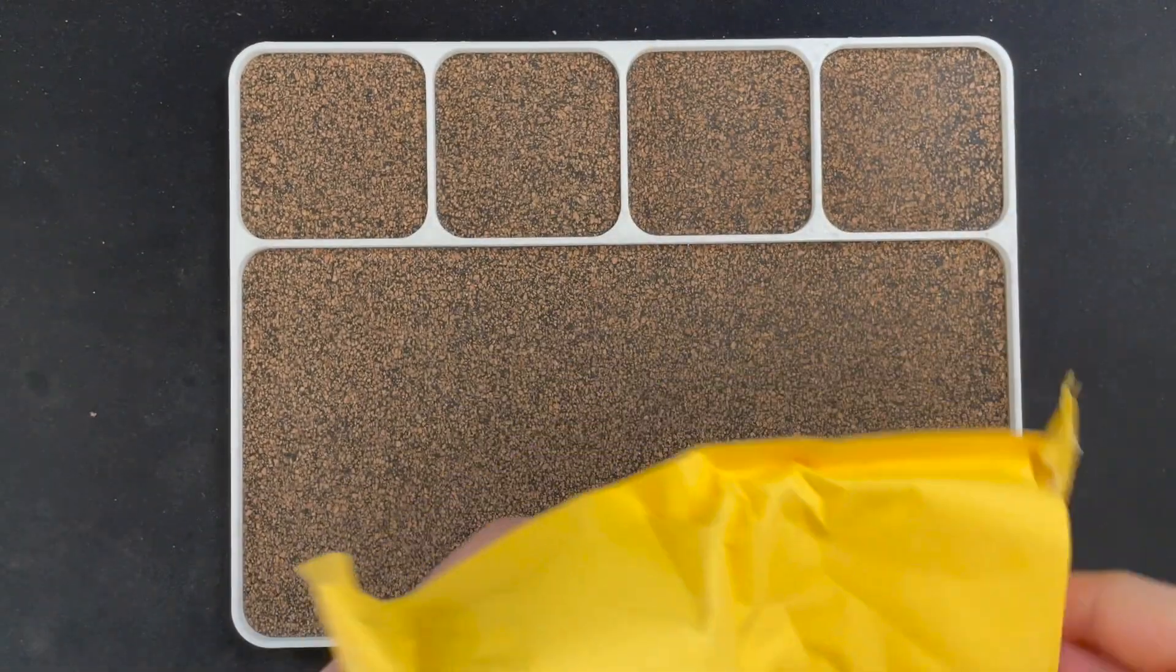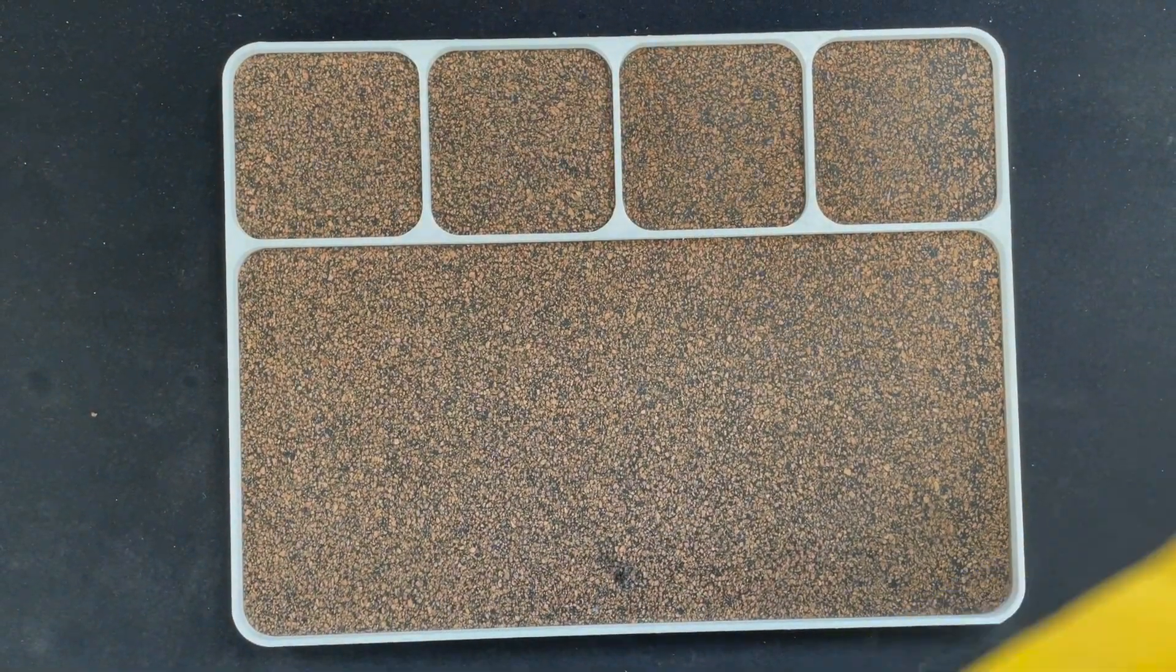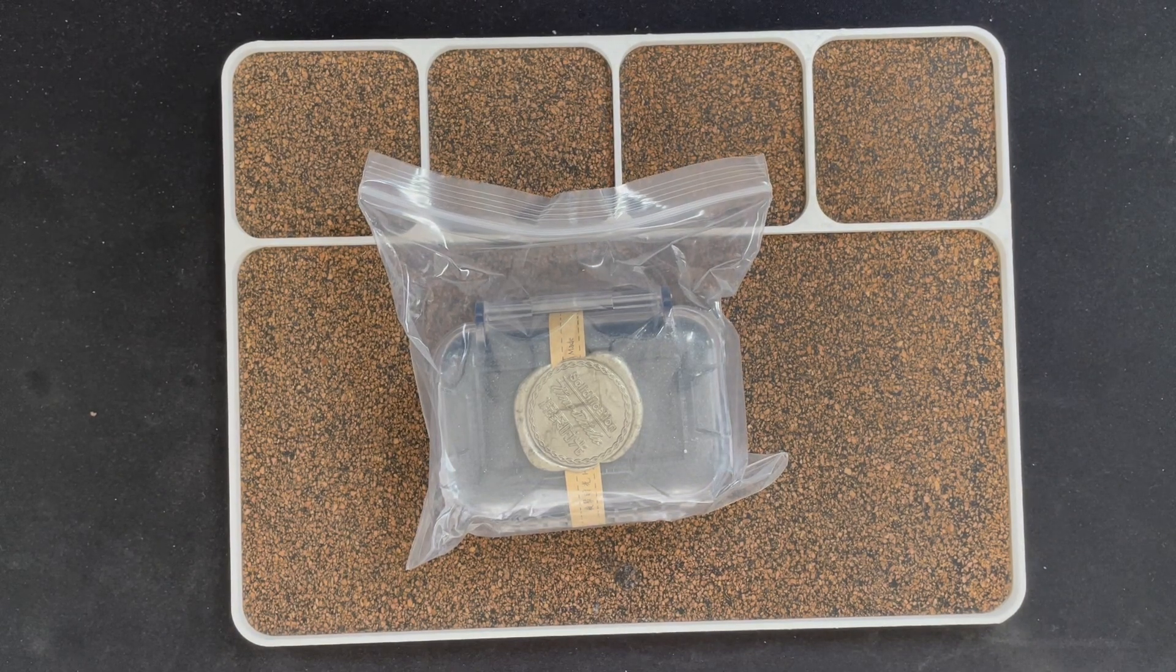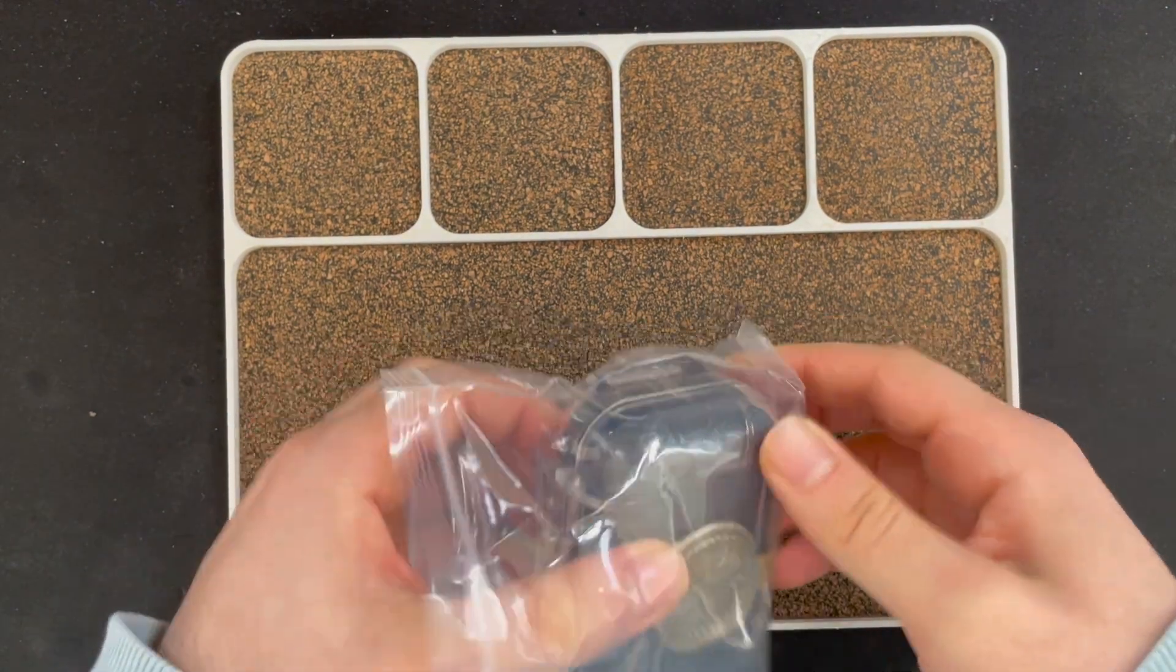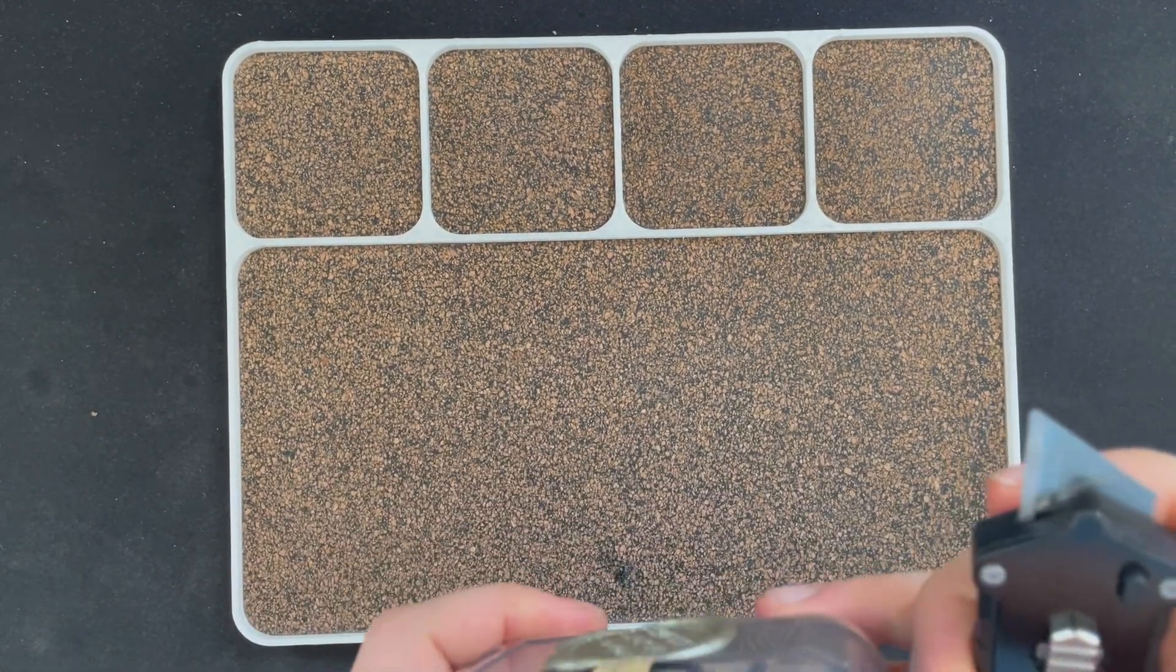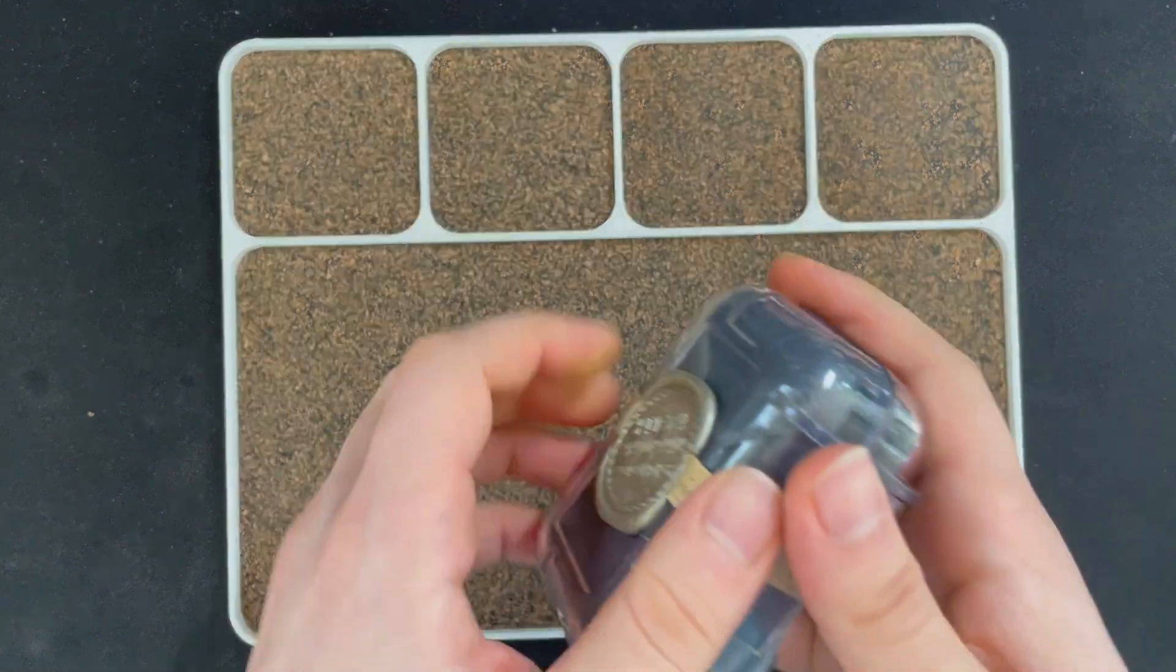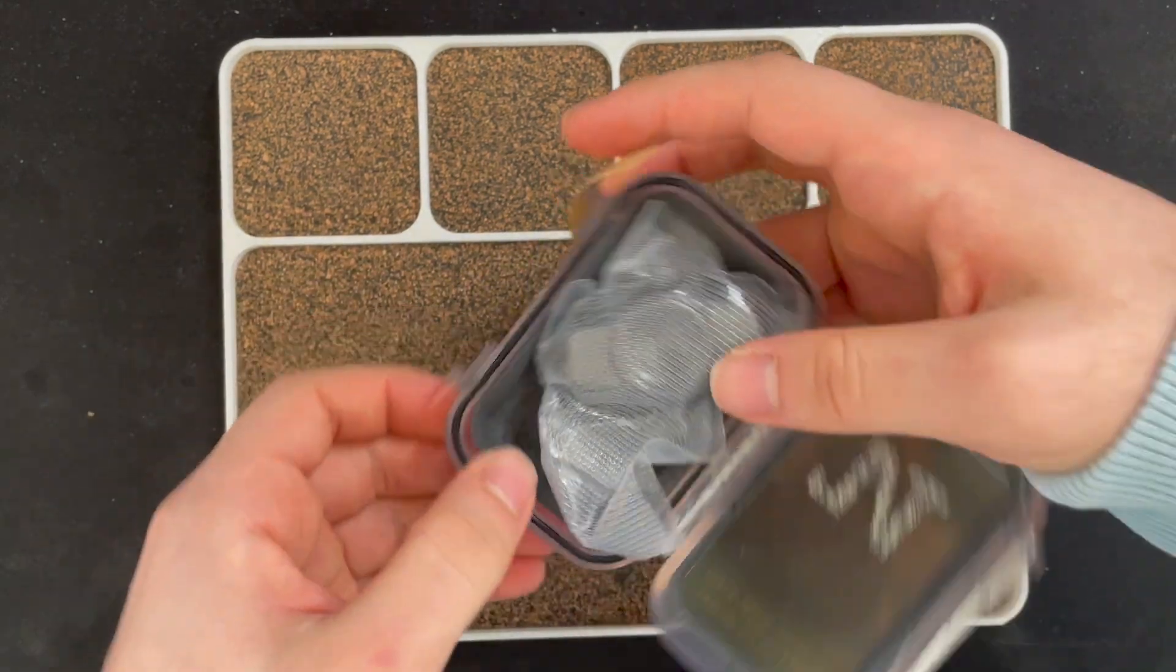All right, and again check out Soli's site and Facebook page down below - NJT Hand Power on Facebook and njtpower.com. Use code DailyDose10 to get 10% off. All right, let's dig into it. There we go. All right. Wow, this is heavy.